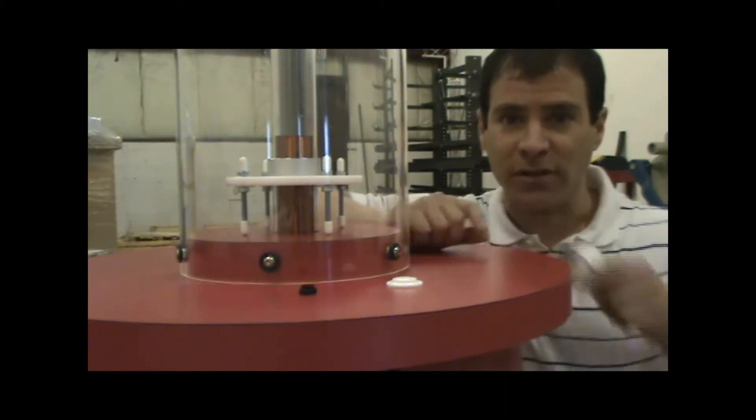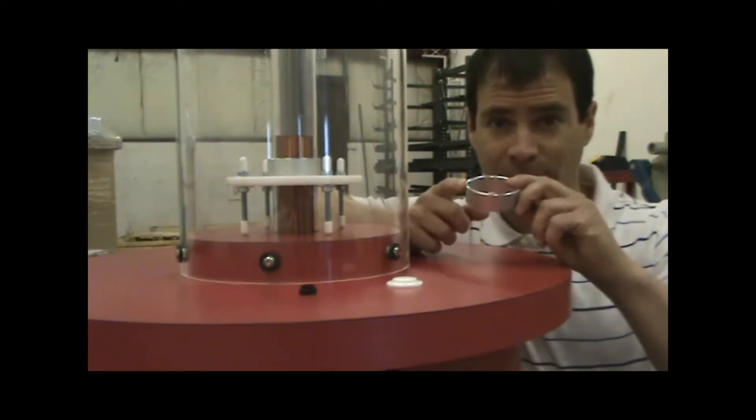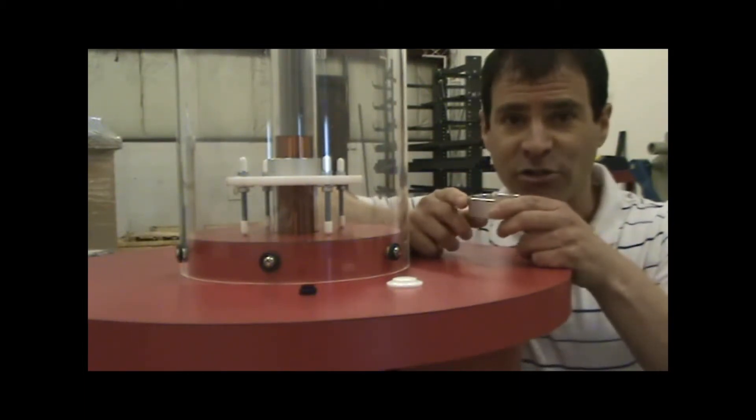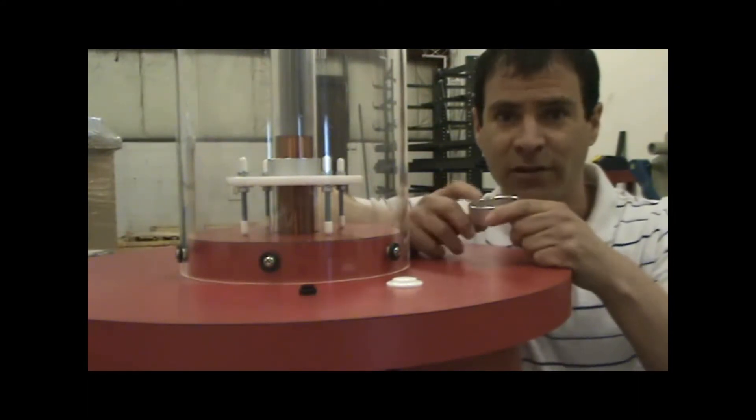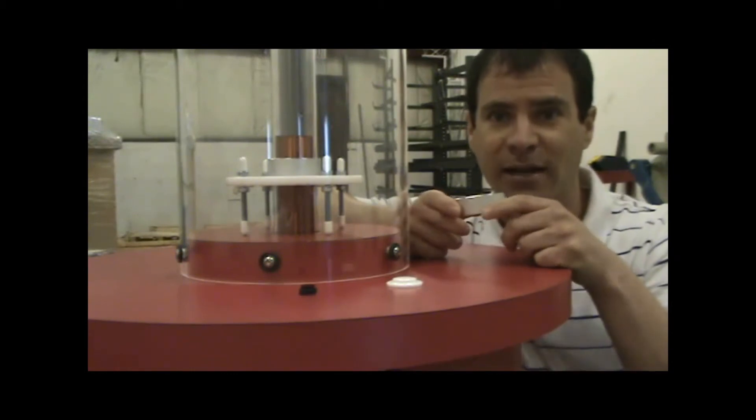That magnetic field induces an electrical current into the aluminum ring. Just as the electricity traveling through the copper wire creates a magnetic field, the electricity in the aluminum ring creates a secondary magnetic field.